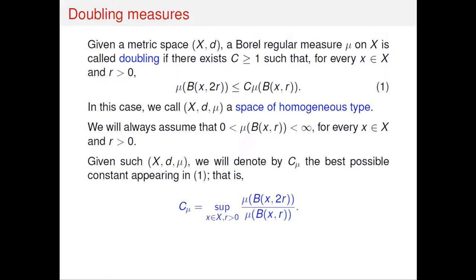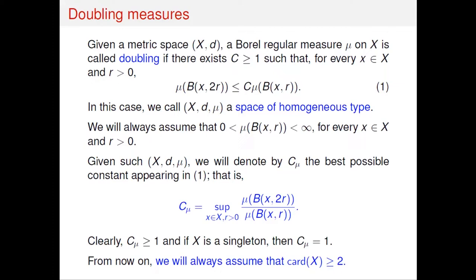Under these conditions, the optimal constant from that inequality is what we call C_mu. This constant depends on X and D — the metric space — but also on mu. Of course, this constant is greater than or equal to one, and it equals one only when X is a single point. So we assume that X has at least two points.